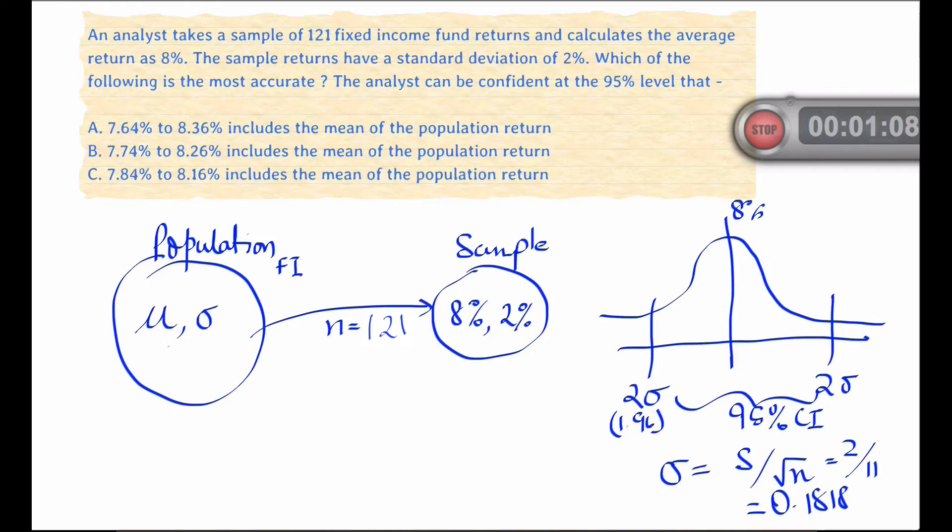So this turns out to 2 over 11 which is 0.1818. So the analyst can be confident at the 95% level that the population mean lies within this interval. And we get the answer of 7.64% to 8.36% which represents that range.